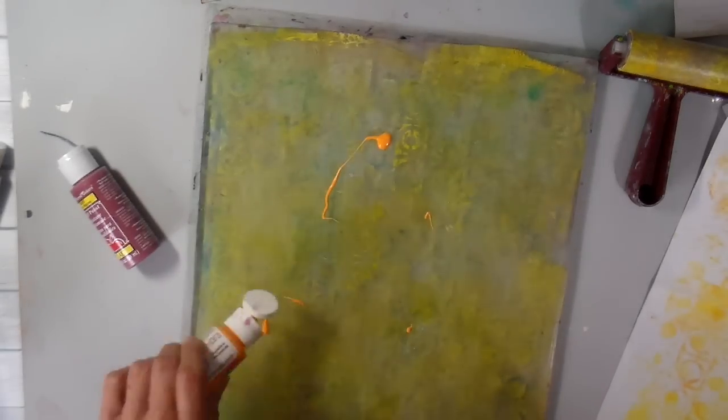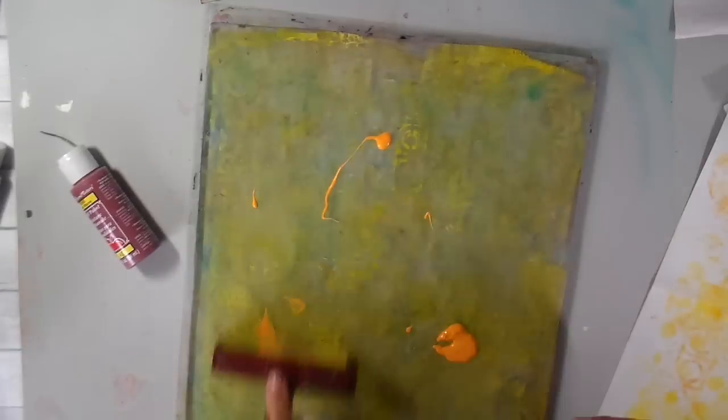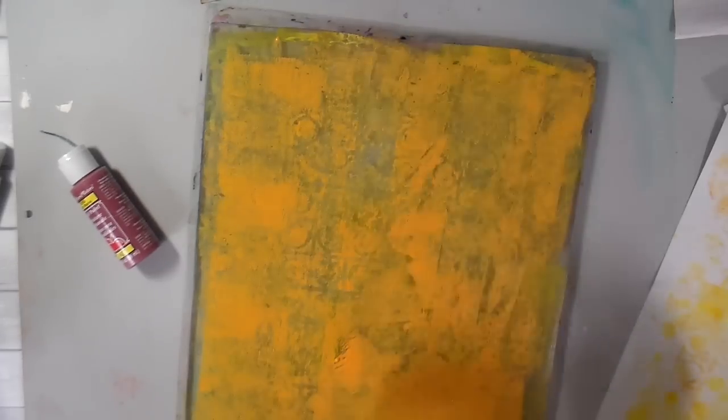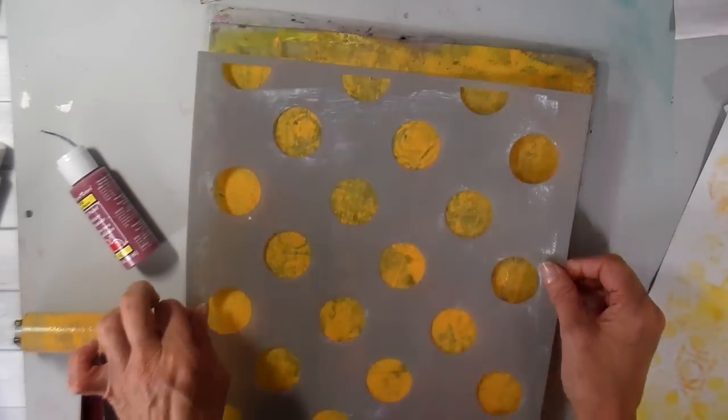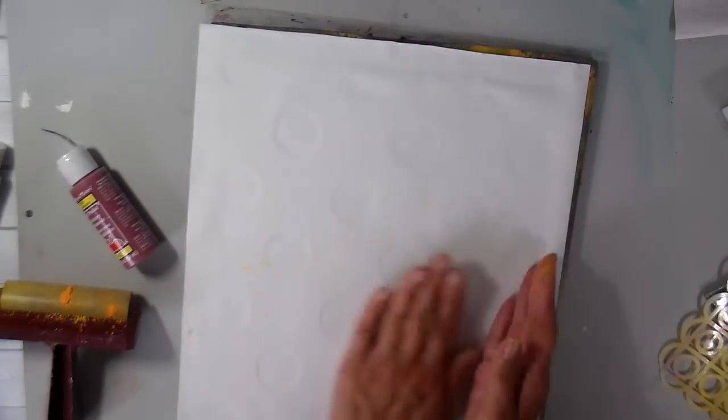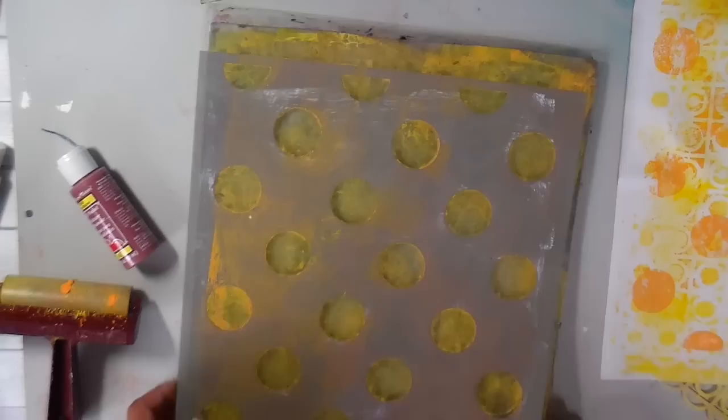Some of these stencils I get at Tuesday Morning and they're no longer available. I do like to pick those big 12 by 12 inch stencils up when I can. Here's another one, the circle one. Just adding another layer to my multi-purpose cloth.